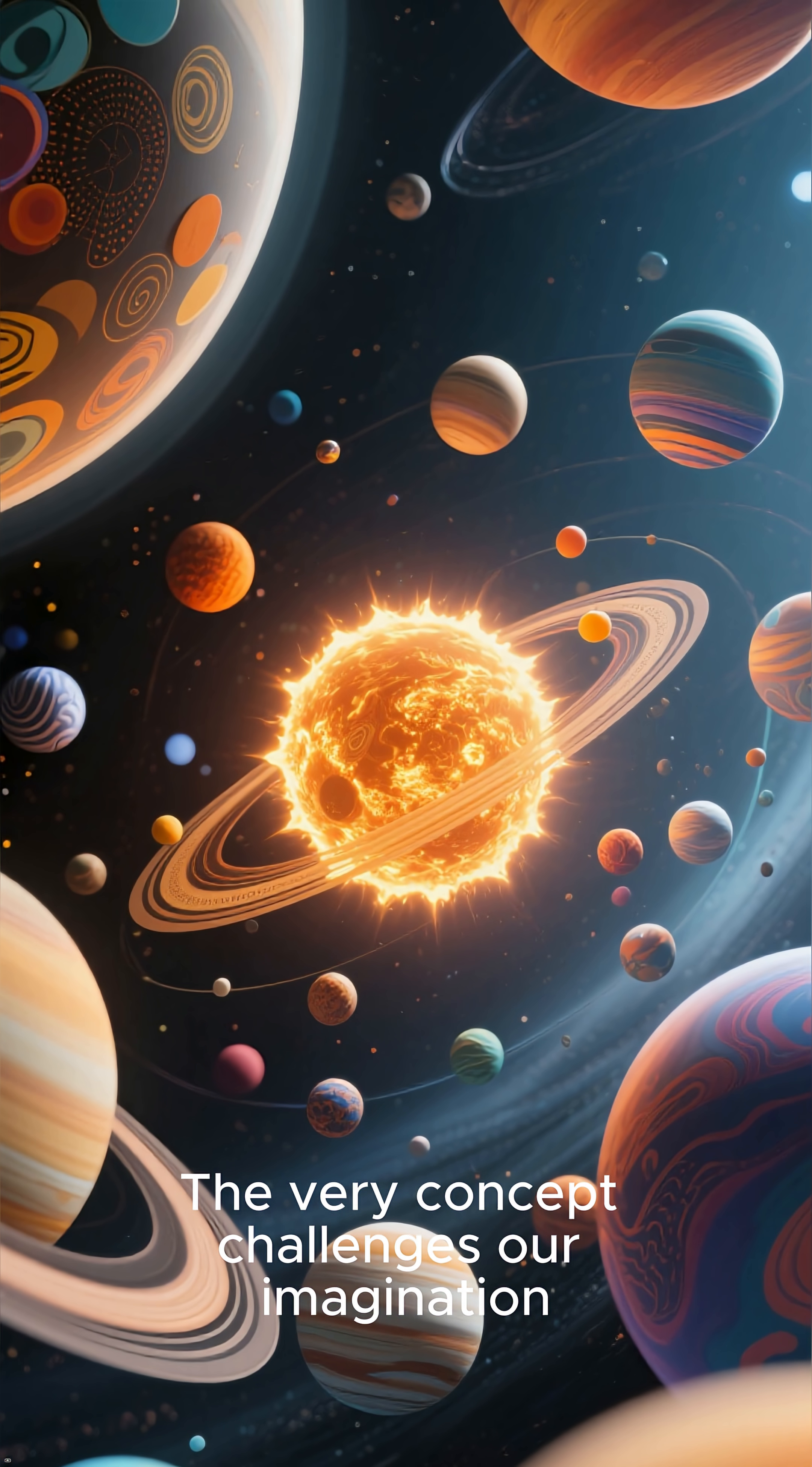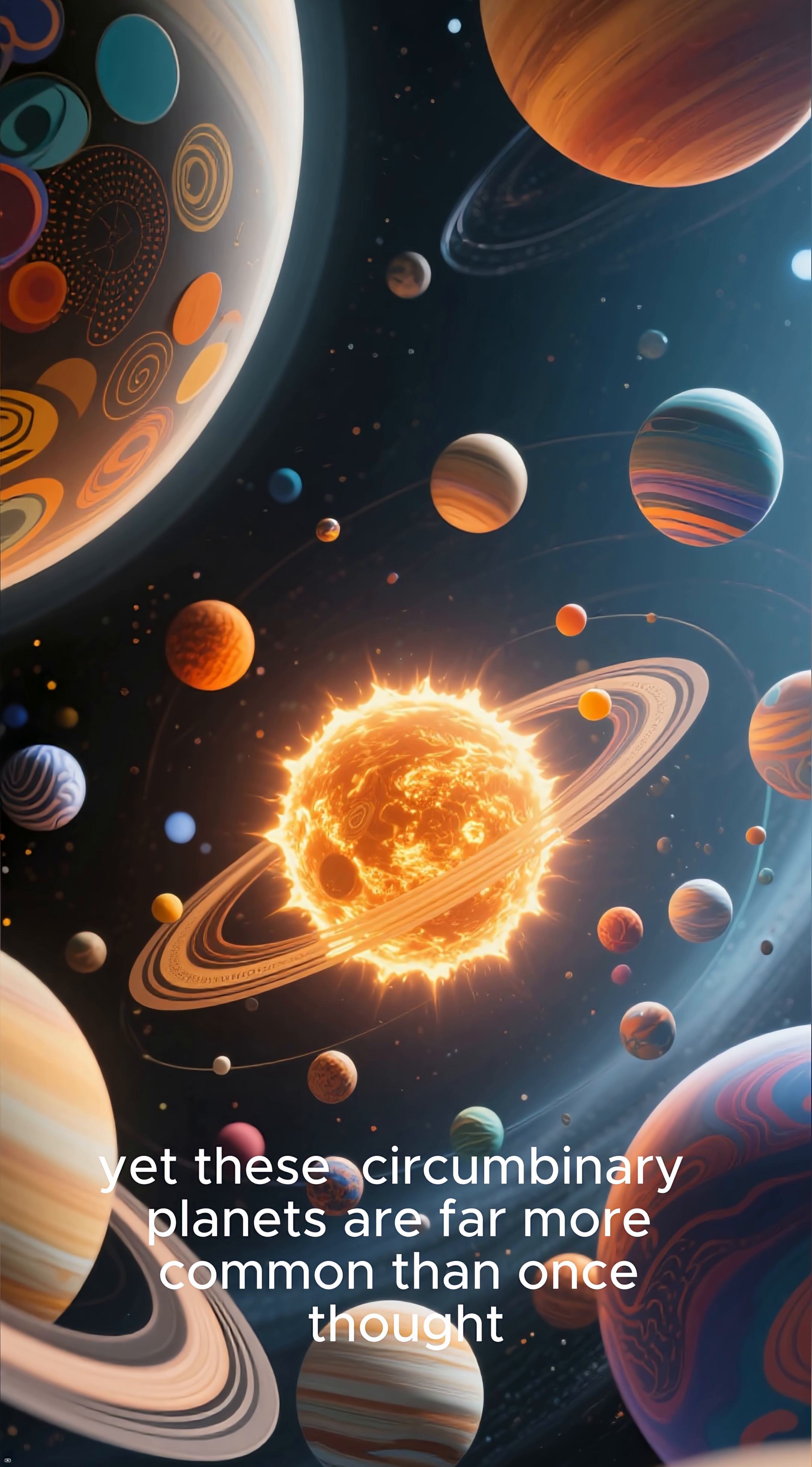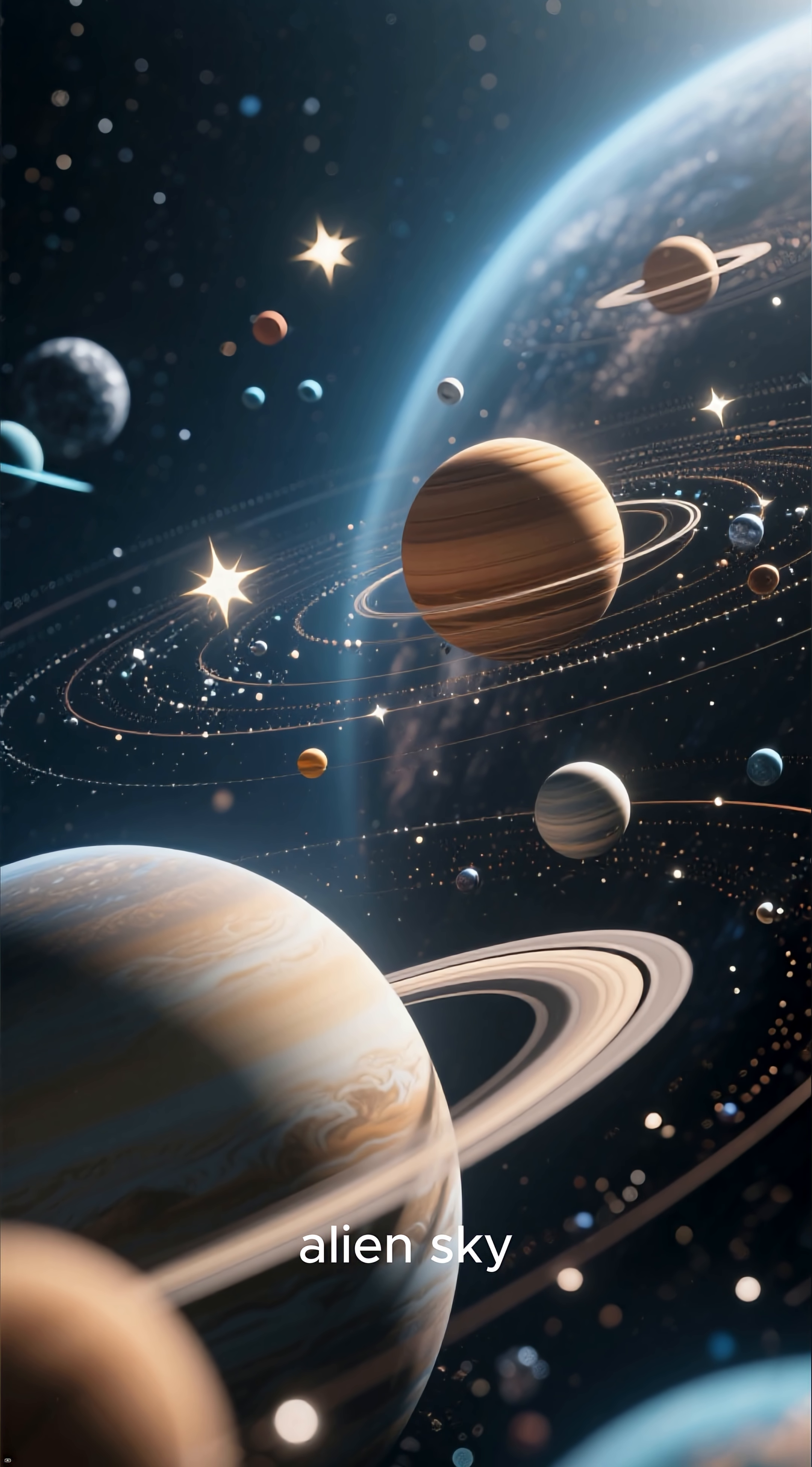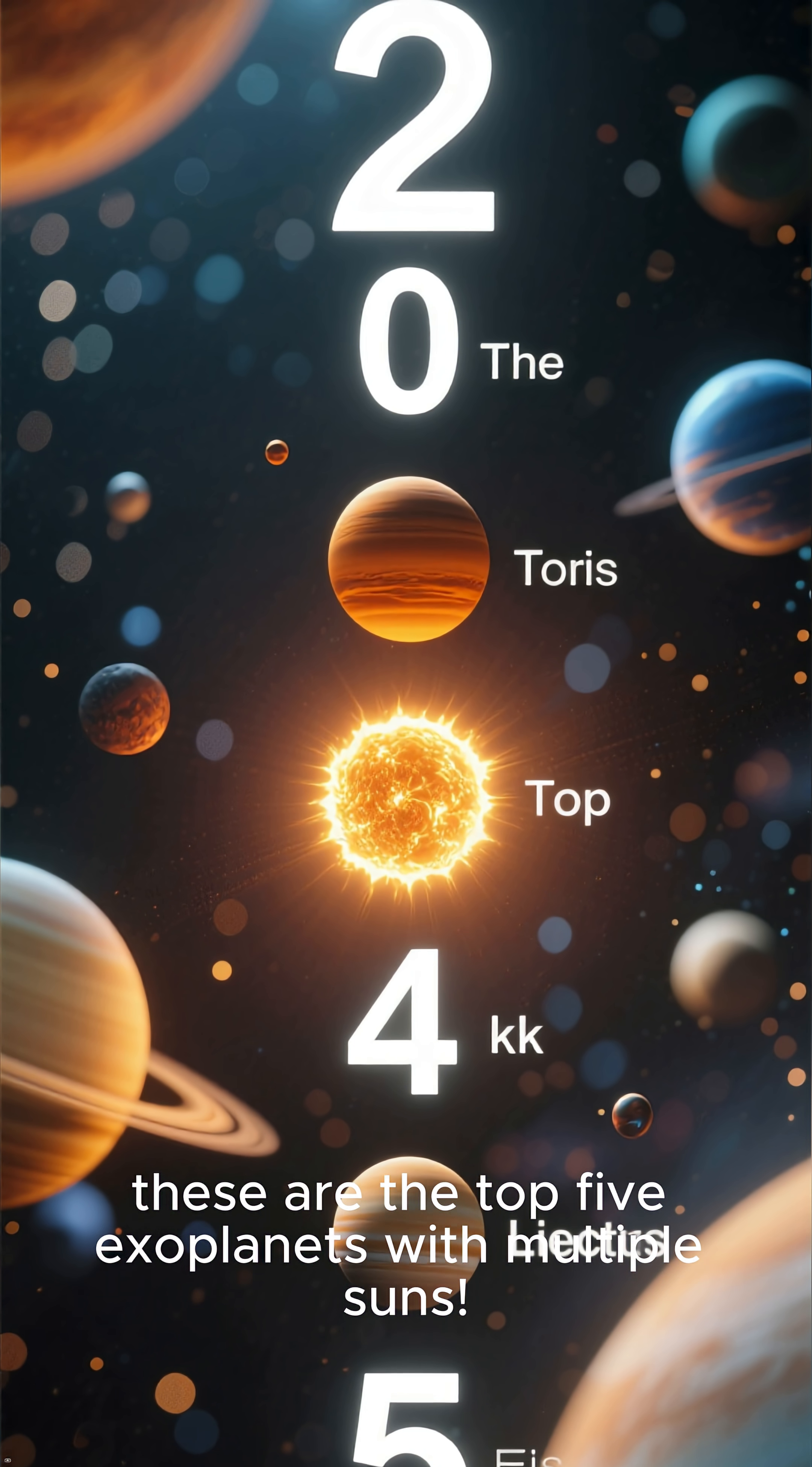The very concept challenges our imagination, yet these circumbinary planets are far more common than once thought. These worlds orbit two or more stars, locked in a complex gravitational dance that creates a stunning alien sky. From wild seasons to multiple shadows, these are the top five exoplanets with multiple suns.